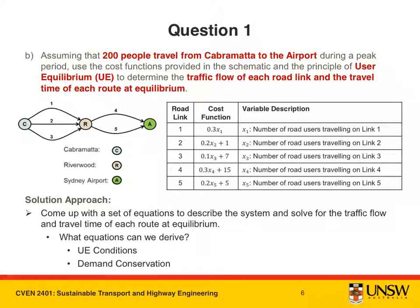Moving on to Part B, we are asked to determine the traffic flow of each road link and the travel time of each route at equilibrium. The solution approach is to come up with a set of equations to describe the system and then solve for the required flow of each link and travel time at equilibrium. The question specifies the principle of user equilibrium, which constitutes our first set of equations. We can also derive another set from the fact that 200 people travel from Cabramatta to the airport, ensuring demand conservation is satisfied.